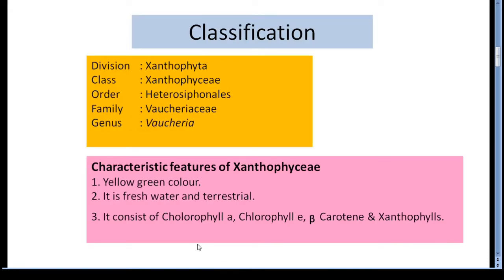Now, Vaucheria comes under division Xanthophyta, Class Xanthophyceae, Order Heterosiphonales, Family Vaucheriaceae, Genus Vaucheria.